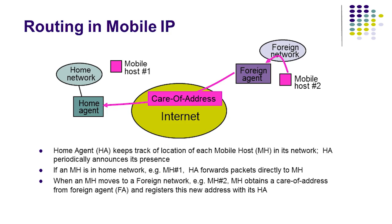This figure illustrates routing in mobile IP that allows portable devices, called mobile hosts, to roam from one area to another while maintaining communication sessions. One requirement in mobile IP is that a mobile host must continuously use its permanent IP address even as it roams to another area. Otherwise, existing sessions will stop working and new sessions would need to be started when a mobile host moves to another area.